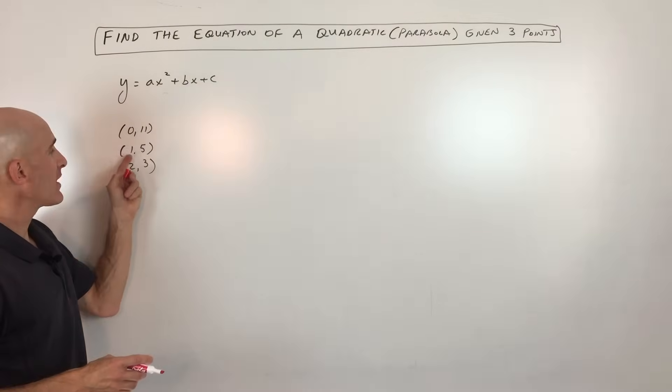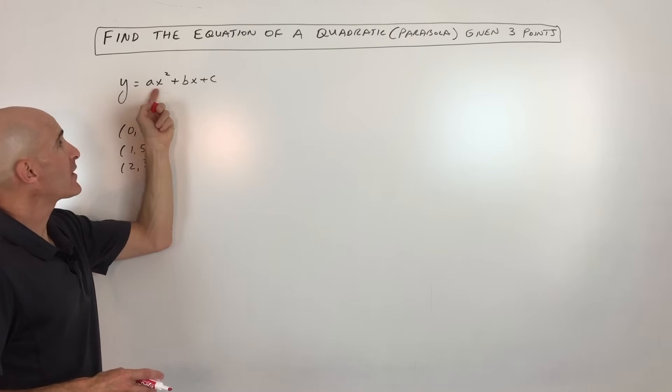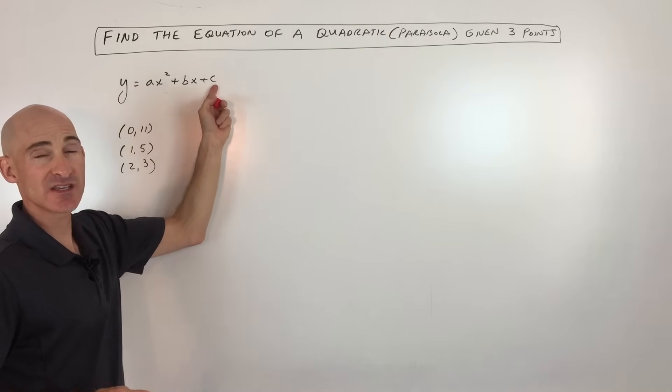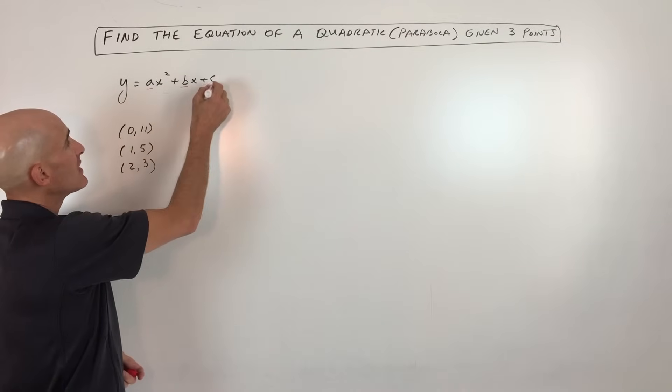Say we're given these three points: (0, 11), (1, 5), and (2, 3). Now the equation of a parabola can be written in its general form like this: y equals ax squared plus bx plus c. So what we're going to do is solve for a, b, and c.